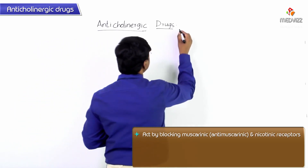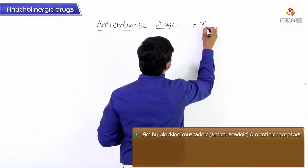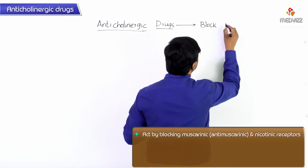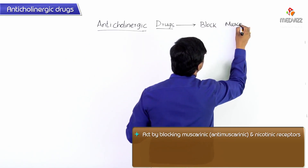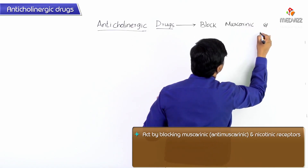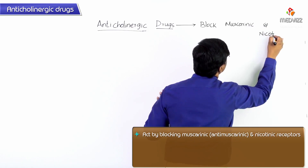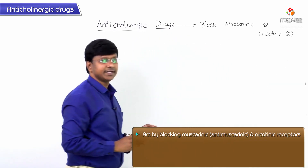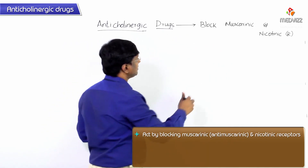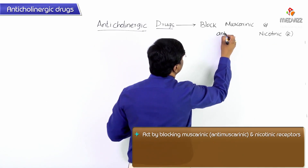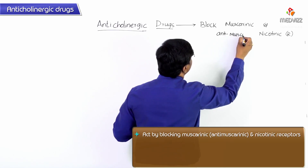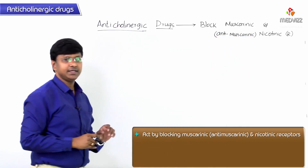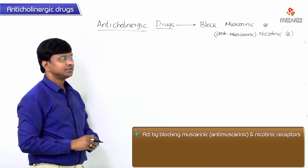Because the anticholinergic drugs block the muscarinic receptors, they are called antimuscarinic drugs. They block both muscarinic and nicotinic receptors.